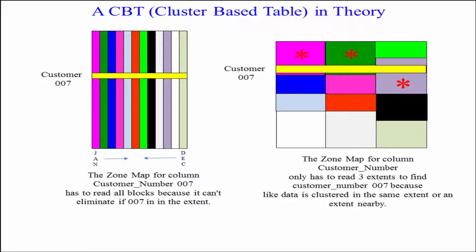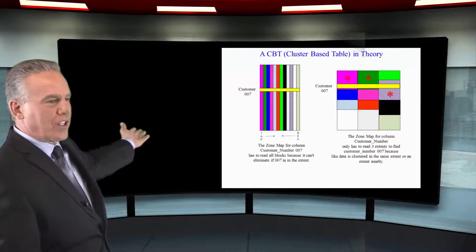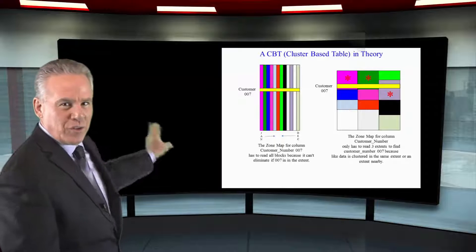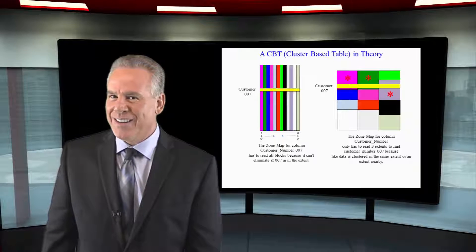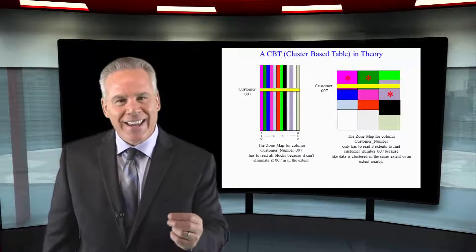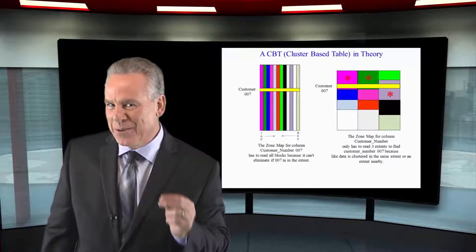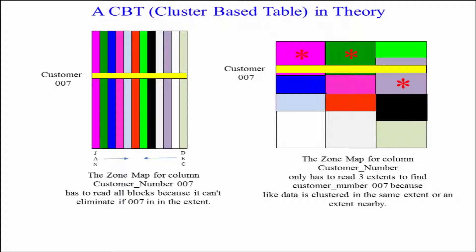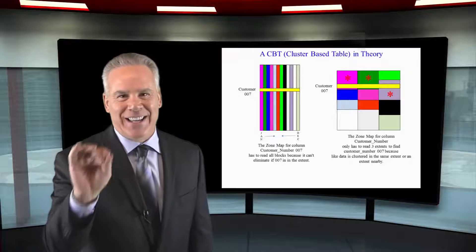I want you to take a look on the left side of the slide. You're going to see that customer 007 has placed a lot of different orders, and customer 007 is in all of the extents on this spool. So if we were querying where customer number is equal to 007, it's going to have to look in every single extent.